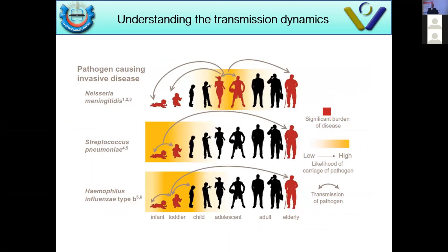One difference in epidemiology between the three famous encapsulated bacteria — Streptococcus pneumoniae, Haemophilus influenzae, and Neisseria meningitidis — is that Streptococcus pneumoniae and Haemophilus influenzae show a U-shaped age distribution, affecting infants and the elderly. Neisseria meningitidis has an additional peak around college student age, making it highly contagious in that group.